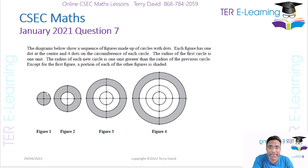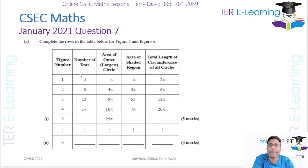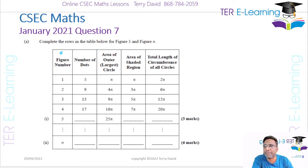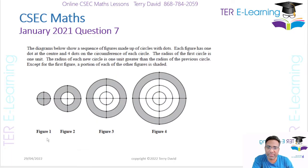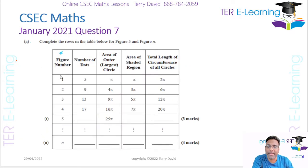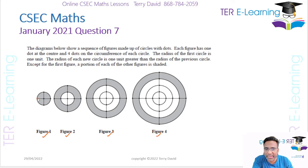So we have some circles, some shaded parts of the circle, and as usual they give us a table. We have our figure numbers — figure one, figure two, figure three — so they give us four diagrams or four figures, and that's what this column is showing us.